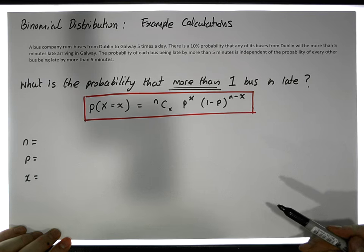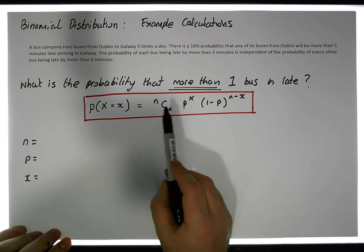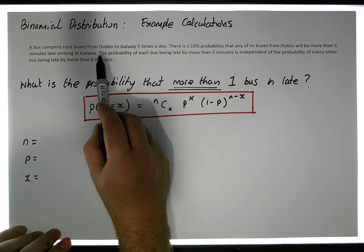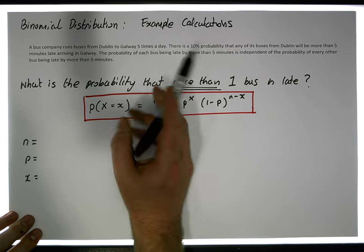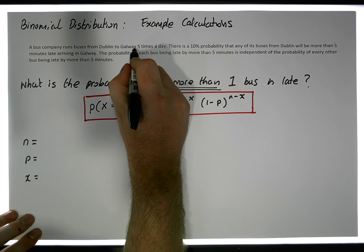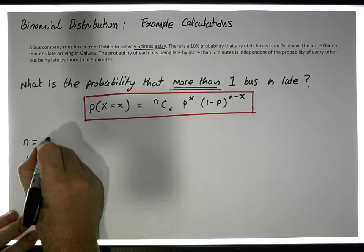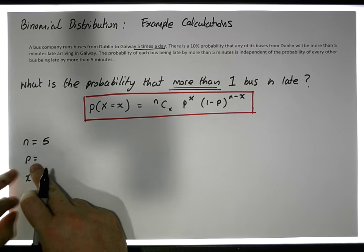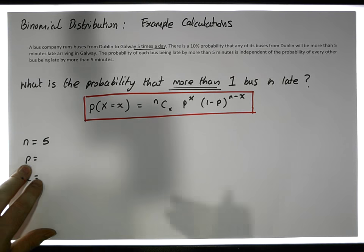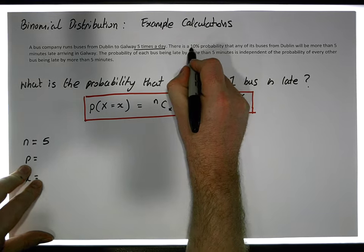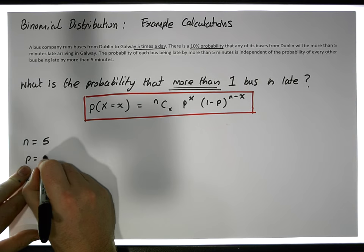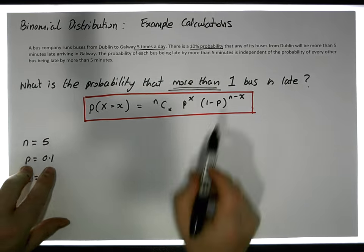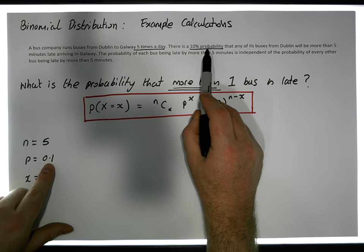In this case there are five buses that make journeys from Dublin to Galway — five times a day — so in our case n is equal to 5. And P is the probability of something happening. In this case we have a 10% probability, so P is equal to 0.10.